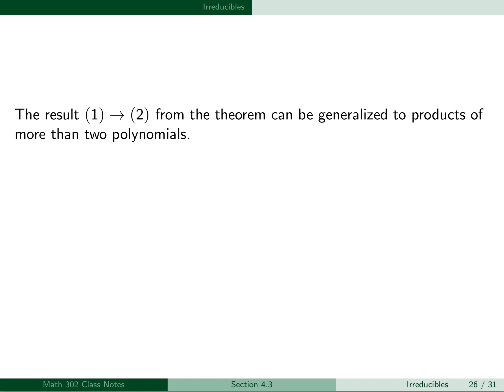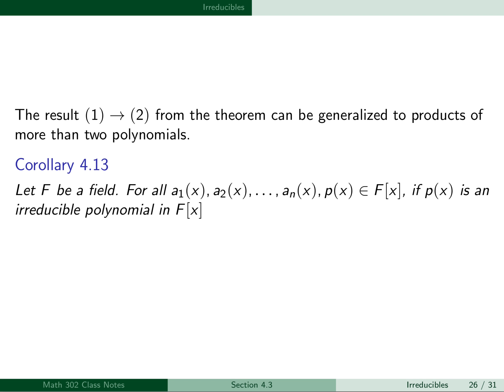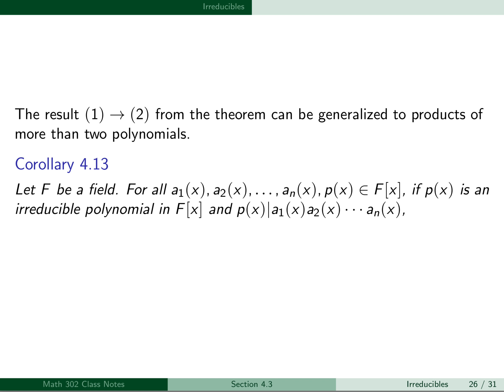The result 1 implies 2 from the theorem can be generalized to products of more than two polynomials. We have the corollary: let F be a field. For all a₁, a₂, ..., aₙ and p in F[x], if p(x) is an irreducible polynomial in F[x] and p(x) divides the product a₁·a₂·...·aₙ, then p(x) divides at least one of the aᵢ(x).